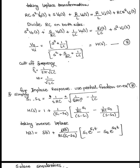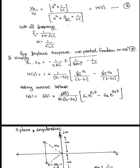For the impulse response of this function, we can use partial fractions on our transfer function and find the roots of the quadratic equation. Modifying H(s) and applying inverse Laplace transformation, we get h(t) which contains δ(t), the delta function, and u(t), the unit step function, where s1 and s2 are the roots of the quadratic equation.